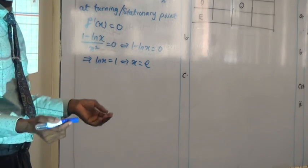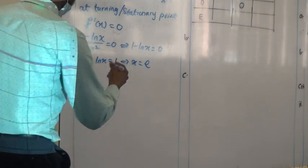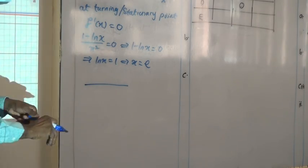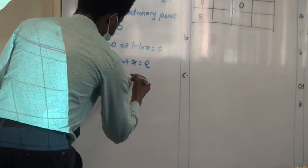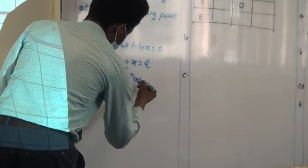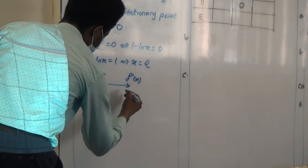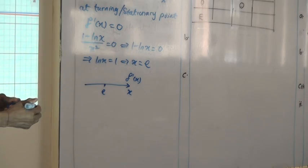The next thing is to justify that that turning point is indeed a maximum. You can check your derivative — find the curvature. Let's see what the sign of the gradient is before and after this turning point. The turning point exists when x is equal to e, so we will check the point before e and the point after e.